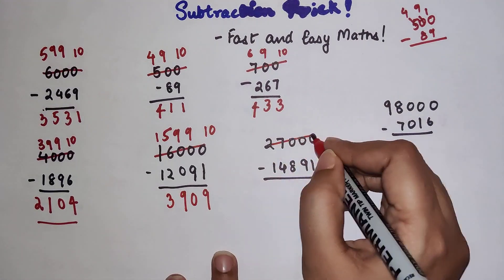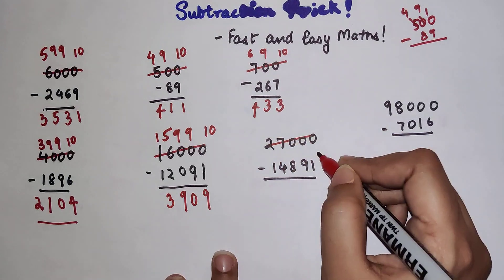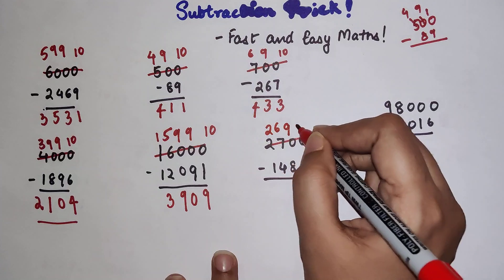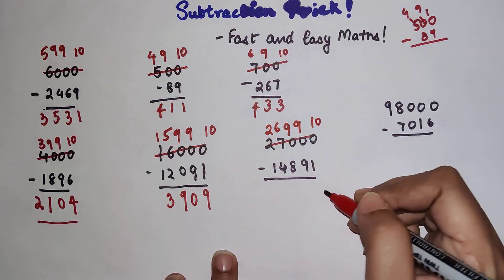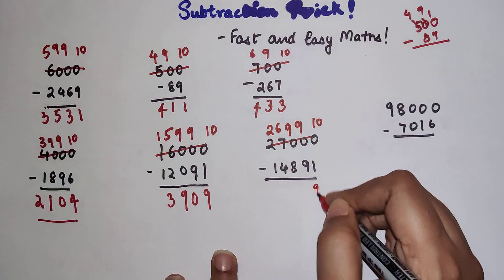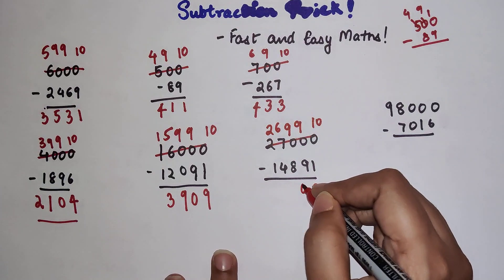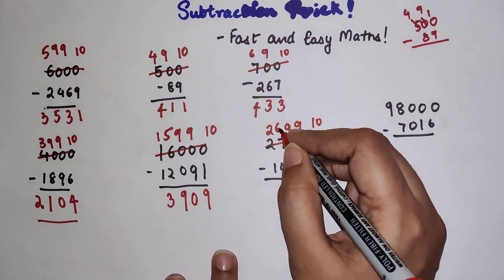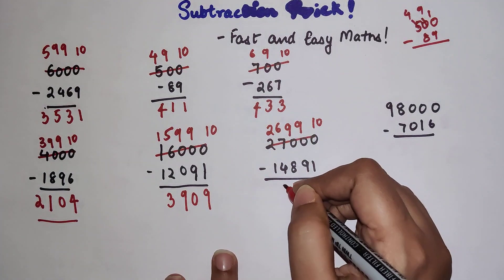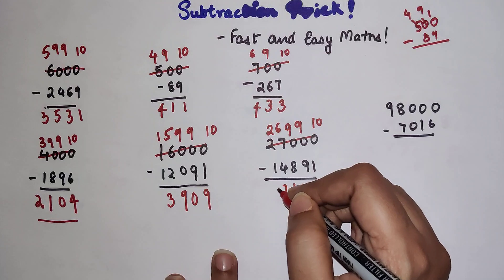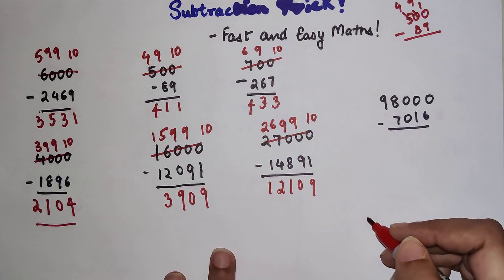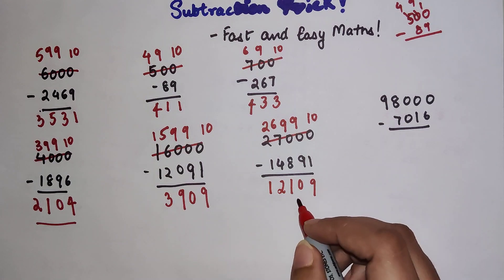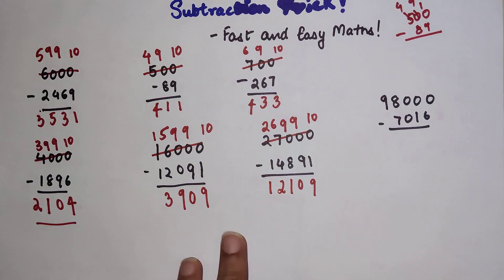Now similarly over here, 27000 will lead to 26, 9, 9, and 10. So now 1 taken from 10 gets you 9, 9 taken from 9 gets you 0, 8 taken from 9 gets you 1, 4 taken from 6 gets you 2, and 1 taken from 2 gets you 1. So in this case your final answer is 12109.